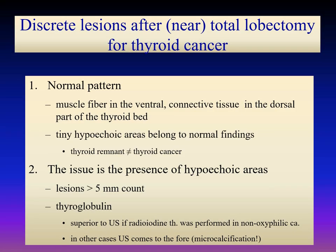The last challenge is the interpretation of hypoechoic areas in a patient who underwent lobectomy or near-total lobectomy for thyroid cancer. In most cases, muscle fiber and connective tissue replace the thyroid parenchyma — muscle is seen ventrally while connective tissue is seen dorsally. Within the isoechoic connective tissue, tiny hypoechoic areas of a few millimeters are frequently seen, which can be part of the connective tissue or small muscle fiber. The larger the hypoechoic area, the more likely it is of thyroid origin. If vascularity is detected in the lesion, it clearly favors thyroid remnant, while the lack of vascularization has no relevance.